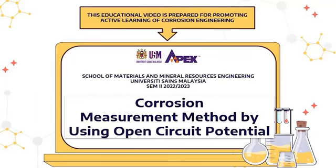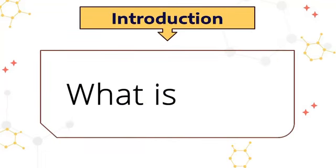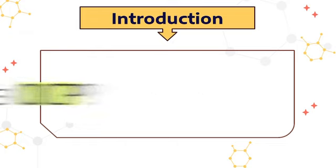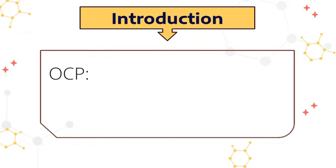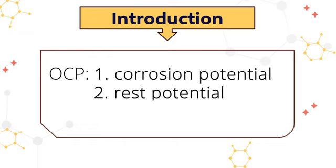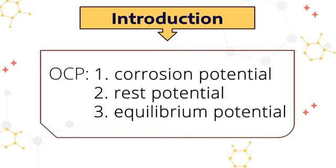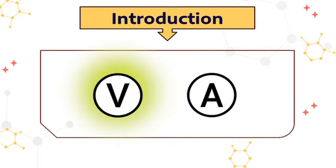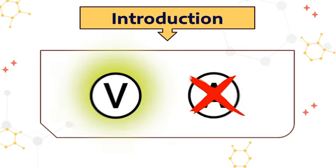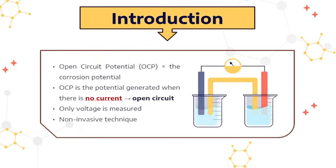Corrosion measurement method using open circuit potential. Open circuit potential, or OCP, is known as the corrosion potential, rest potential, or equilibrium potential. The potential is generated when no current flows because the circuit is open. In OCP, only voltage is measured.